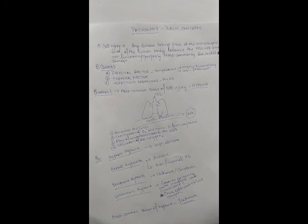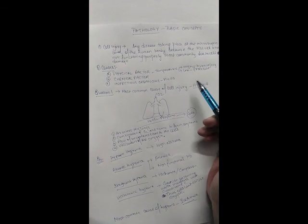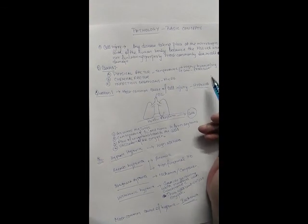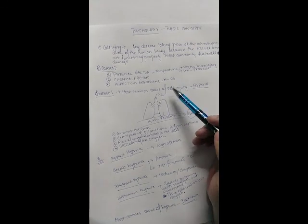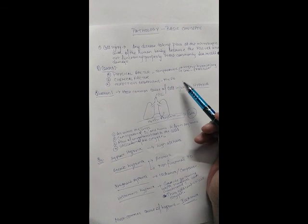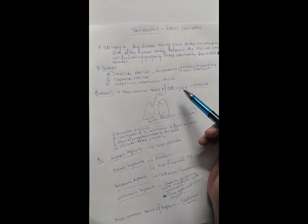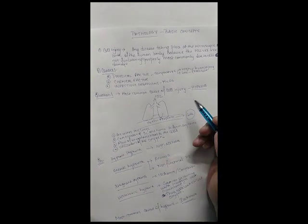Most commonly we can see damage due to various reasons. First I want to shed some light upon physical factors which involve temperature. If the temperature gets high we can see burn injuries and if it gets low we can see frostbites. There are also chemical factors or infectious organisms. The most common question which comes regarding this topic is the most common cause of cell injury. The most common cause of cell injury is definitely going to be hypoxia.